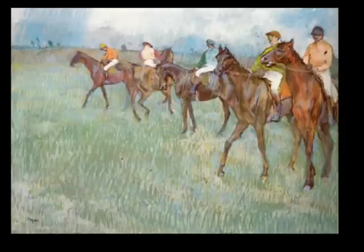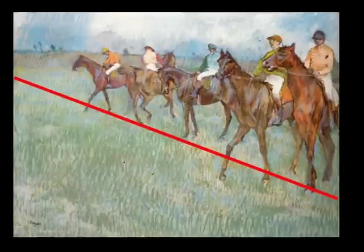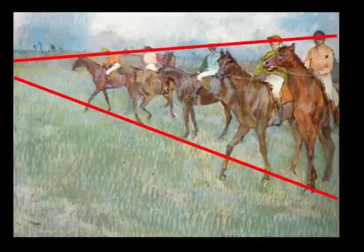When actual lines are not present, implied lines can be used to create directional forces. In the case of Degas's jockeys, an implied line can be created by connecting the points of the horse's hooves. Another implied line can be created through the points of the jockey's heads.